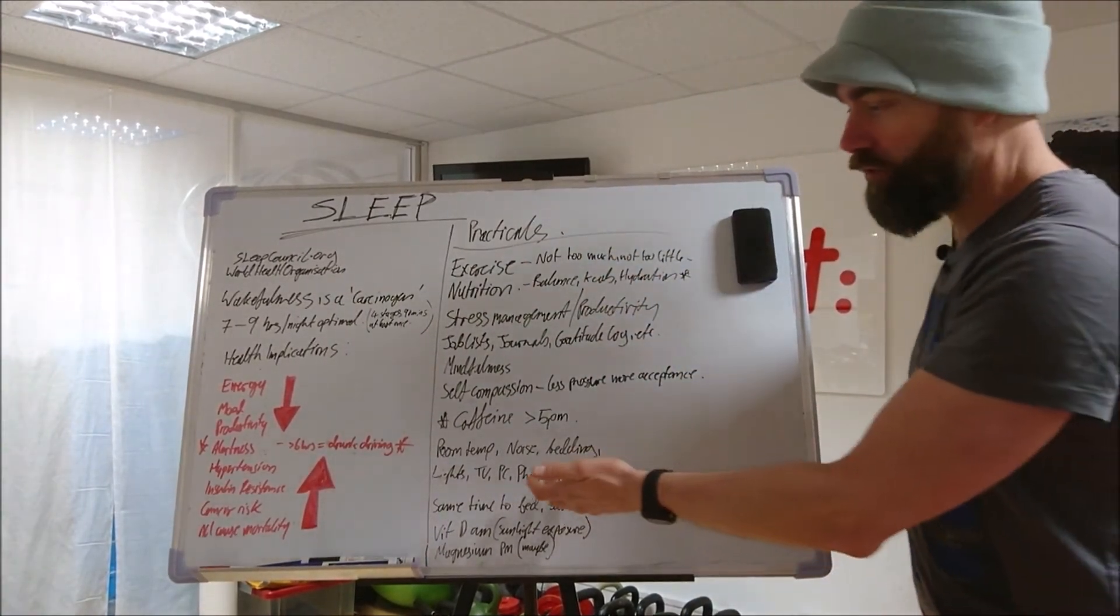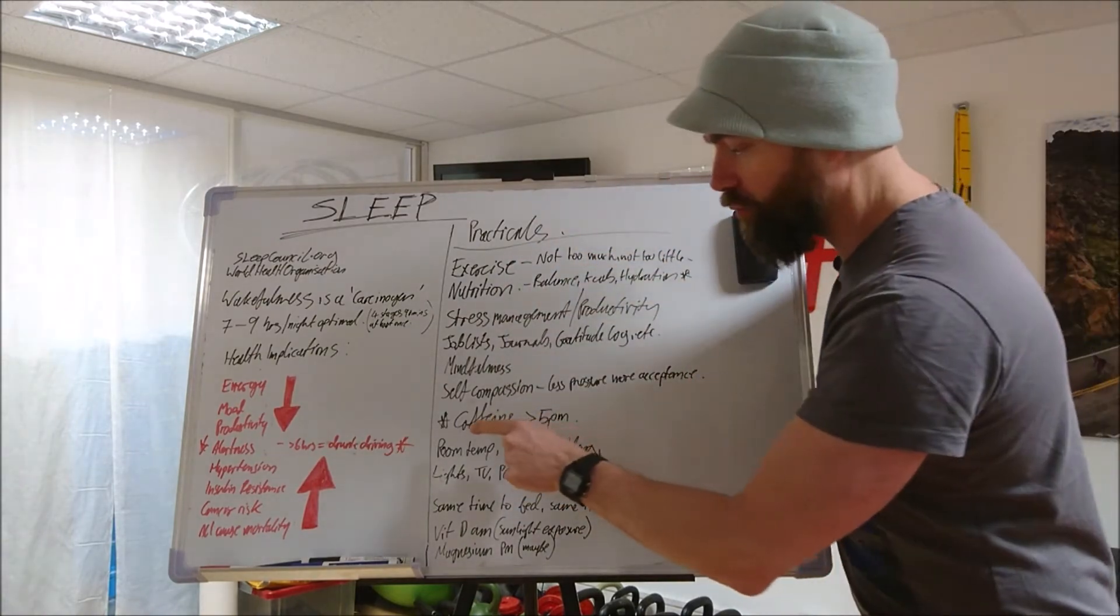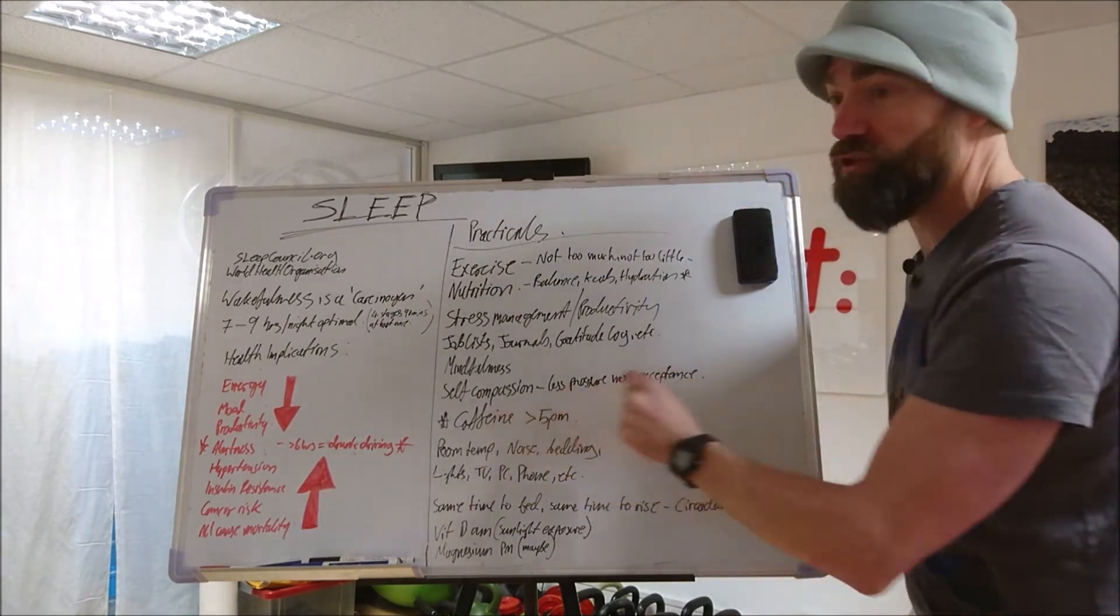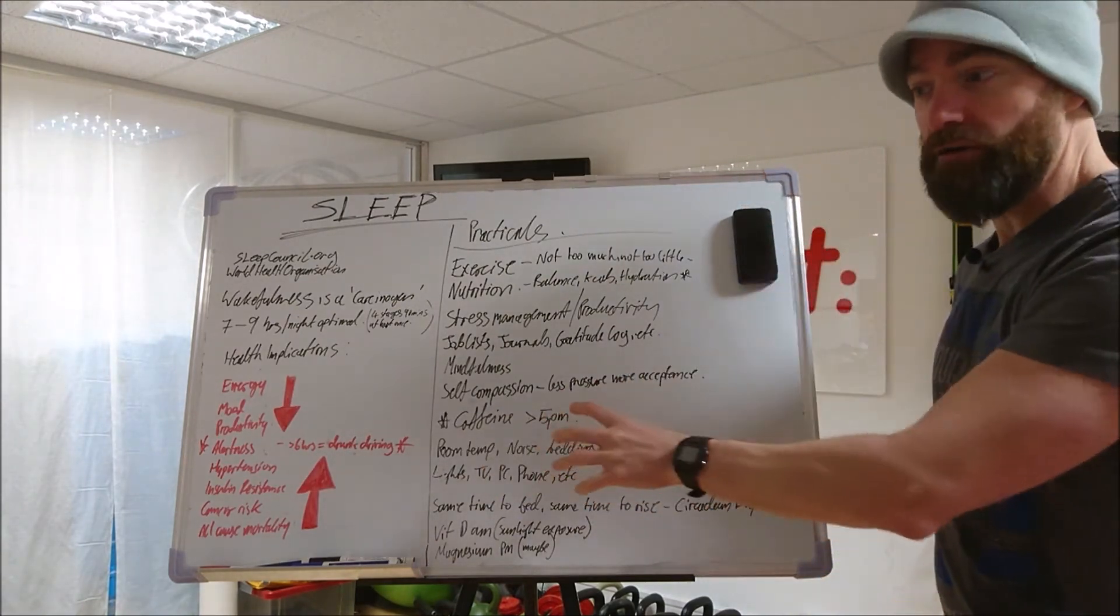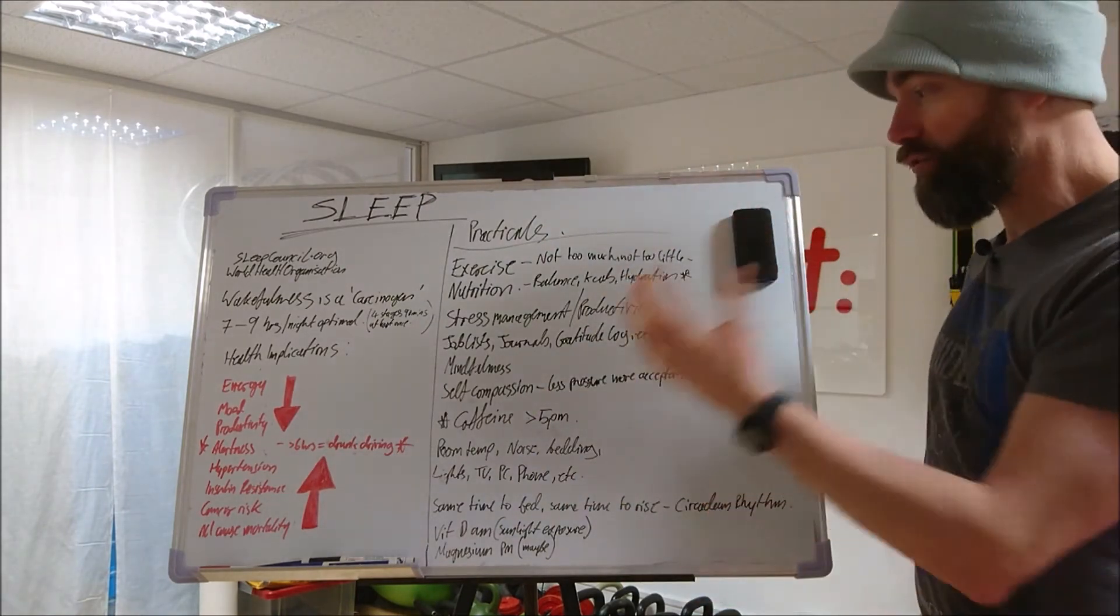And then as the day winds down and the sun sets and everything gets dark, you start releasing melatonin, which then sends you to sleep. Bright lights in the evening are going to switch that system off and you're not going to be producing the melatonin and the serotonin. You're going to be producing probably adrenaline or cortisol, and then you're not going to get to sleep.